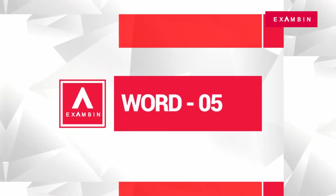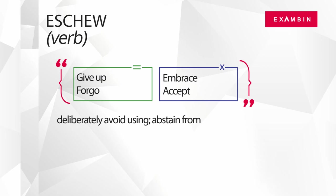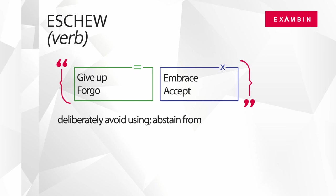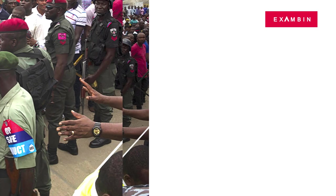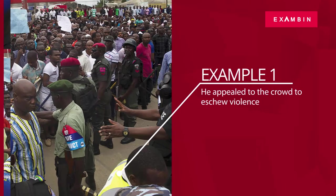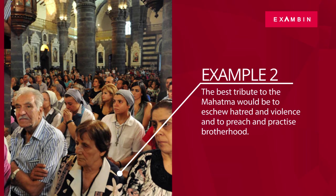The last word of today's episode is 'eschew.' Eschew is a verb. The direct synonyms of eschew are 'give up' and 'forgo.' In general context, eschew means to deliberately avoid using or abstain from. 'Embrace' and 'accept' are some terms referring to the opposite meaning. Example: 'He appealed to the crowd to eschew violence.' Another example: 'The best tribute to the Mahatma would be to eschew hatred and violence and to preach and practice brotherhood.'